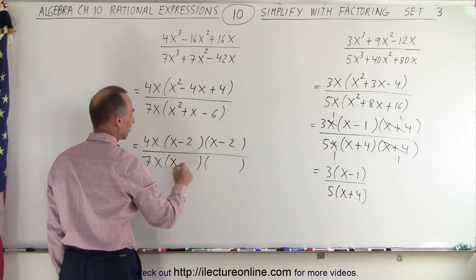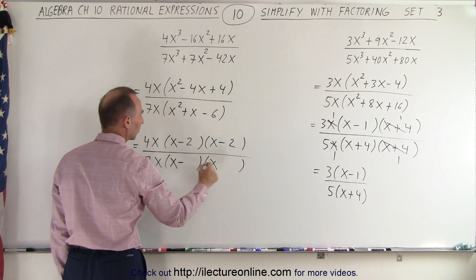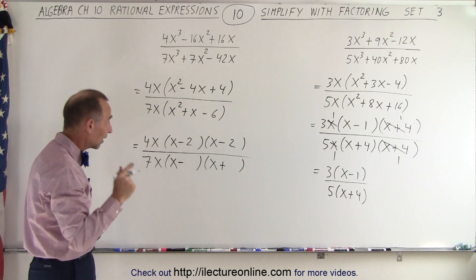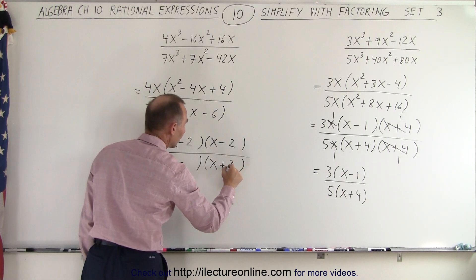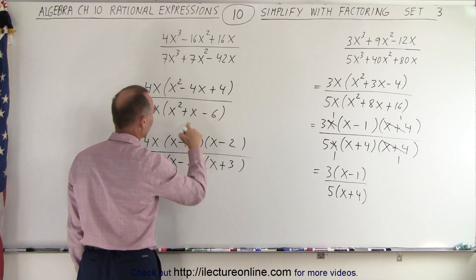For the denominator, again, x and x. For the signs, one must be negative, one must be positive. When we add, we get a positive 1, which means that the positive is 1 larger than the negative. So how about 3 and 2? Because when I multiply, I get negative 6. When I add, I get a positive 1.